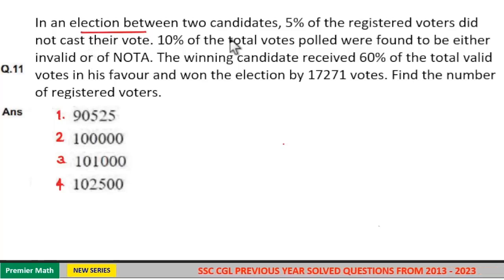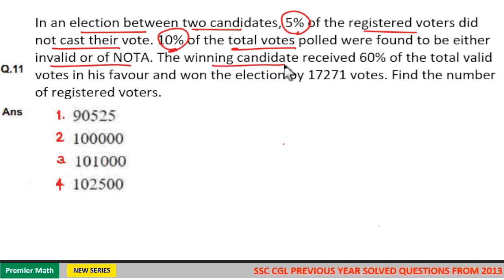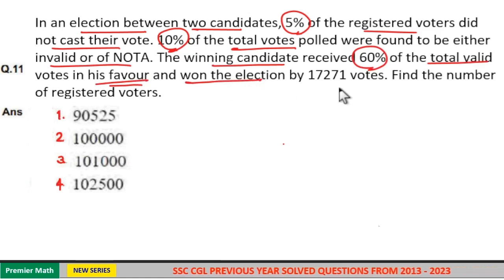In an election between two candidates, 5% of the registered voters did not cast their vote. 10% of the total votes polled were found to be either invalid or NOTA. The winning candidate received 60% of the total valid votes in his favour and won the election by 17,271 votes. Find the number of registered voters.